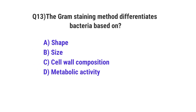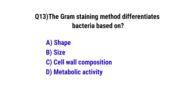Question number 13. The gram-staining method differentiates bacteria based on. The correct option is C: cell wall composition.